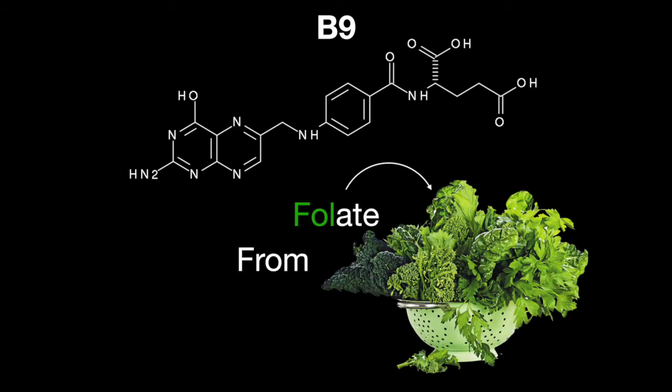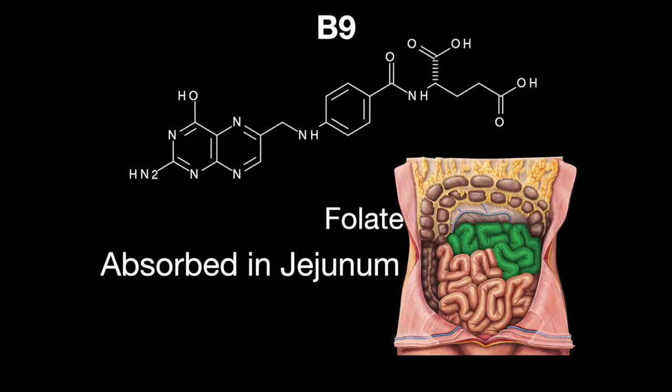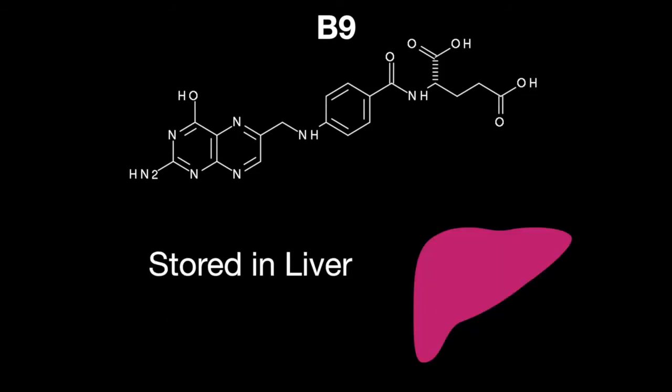Folate can be found in green leafy vegetables — folate from foliage. It is absorbed in the jejunum, and a small reserve is stored in the liver.